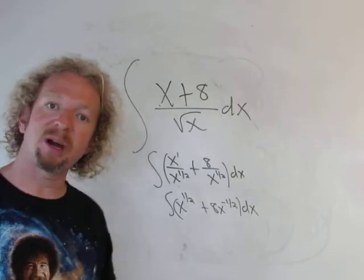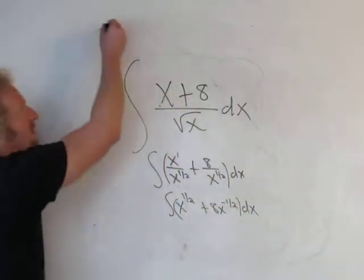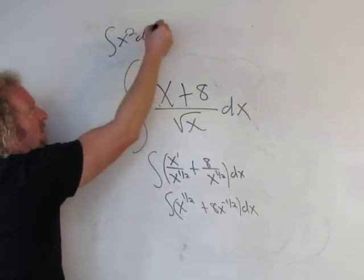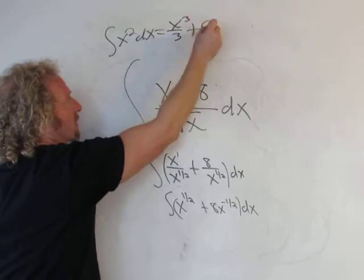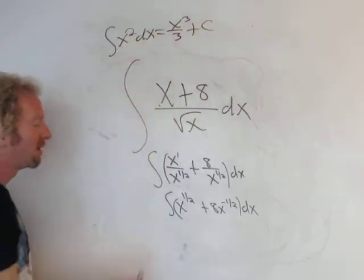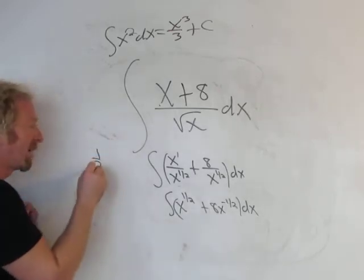And now everything is x to a power, so we're ready to use the power rule. So all we do is add one to all of the exponents and then divide by that number. So like, say it was x squared, you would just add one, so you would get x cubed over three, and you would put a plus c. Just add one and divide by the result.